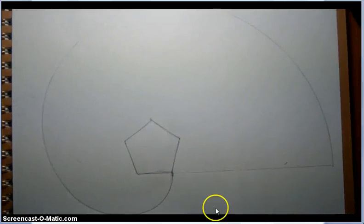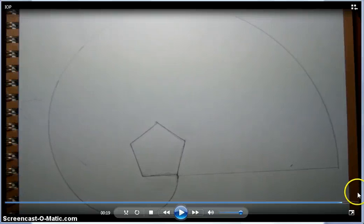So, involute of a pentagon is the trace which the end of a string will make while we are unwinding it. Now to draw this, I'm going to show you how you can do this in engineering drawing.